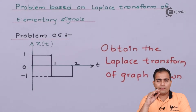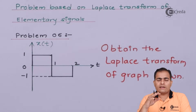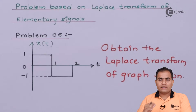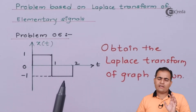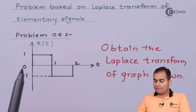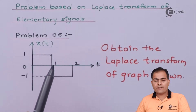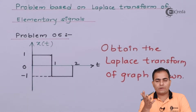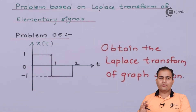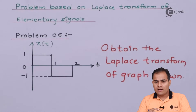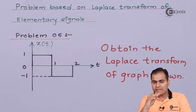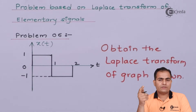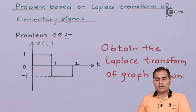This type of question is very important from an exam point of view because in exams most of the time they ask questions related to periodic signals. But for this type of question it is easy to find the Laplace transform, because what we have to do is express this graph in equations. Once you know how to represent this graph as an equation, it is easy to obtain the Laplace transform.